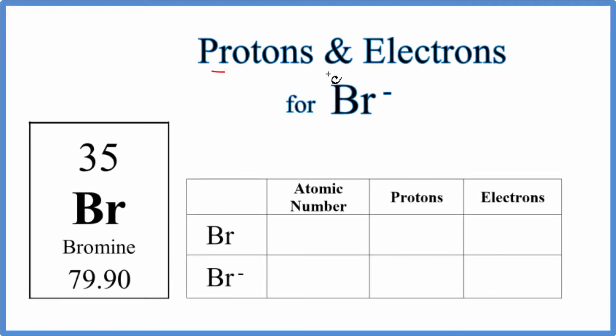In this video, we'll find the number of protons and electrons for the bromide ion, Br-. This is the negative ion for bromine. On the periodic table, we have a neutral element without a negative or positive sign.